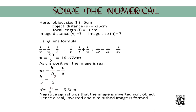Rearranging the equation, we have 1/v equals 1/f plus 1/u. Substituting the values of f and u, we get 1/10 minus 1/25 equals 3/50. Therefore v equals 50/3 cm, which turns out to be 16.67 cm. As v, that is the image distance, is positive, the image will be a real image.